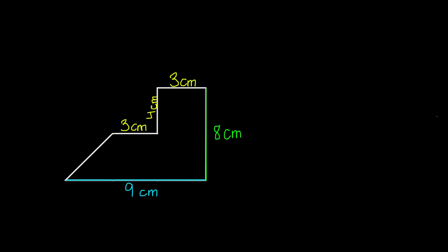So here's an irregular shape. To find the area of irregular shapes, you need to divide them up into shapes that you already know how to find the area of. There are different ways you can divide your irregular shape. I divided my irregular shape into two rectangles and one triangle.